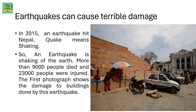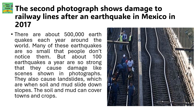The first photograph shows the damage to two buildings done by this earthquake. The second photograph shows damage to railway lines after an earthquake in Mexico in 2017. There are about 500,000 earthquakes each year around the world. Many are so small that people don't notice them, but around 100 earthquakes a year are strong enough to cause damage like that shown in the photographs. They also cause landslides, when soil and mud slide down slopes and can cover towns and crops.